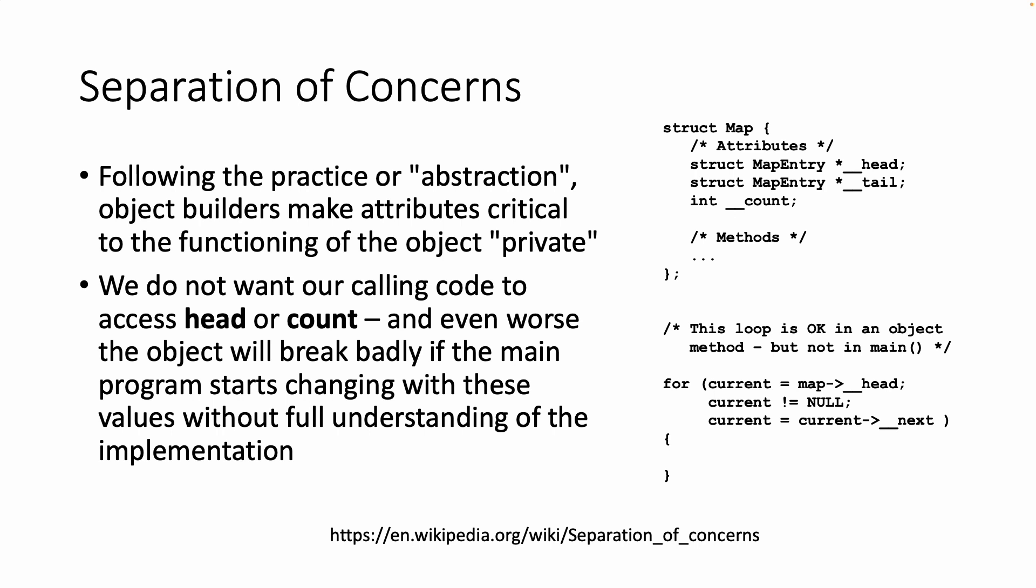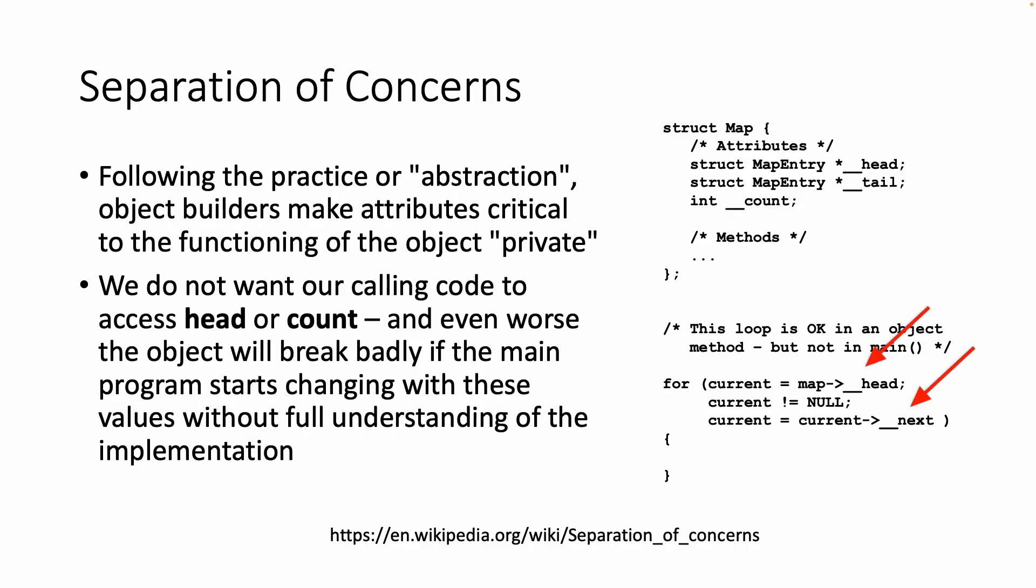If we review what we don't want to do, right? We do not want our calling code to know about count. We do not want it to know about head. We don't even want it to know about next within the entries, right? We don't want to know that. We do want it to know about key and value. And so the calling code where map arrow number underscore head, current underscore next, no. That's not allowed, right? Those are private.